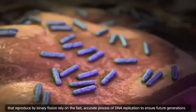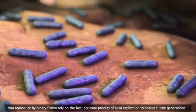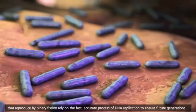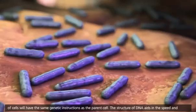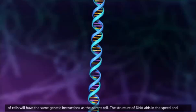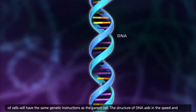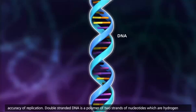Prokaryotic cells that reproduce by binary fission rely on the fast, accurate process of DNA replication to ensure future generations of cells will have the same genetic instructions as the parent cell. The structure of DNA aids in the speed and accuracy of replication.